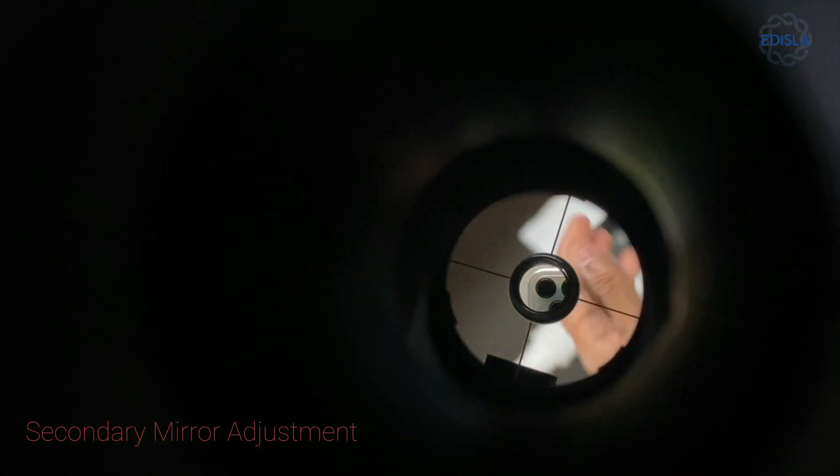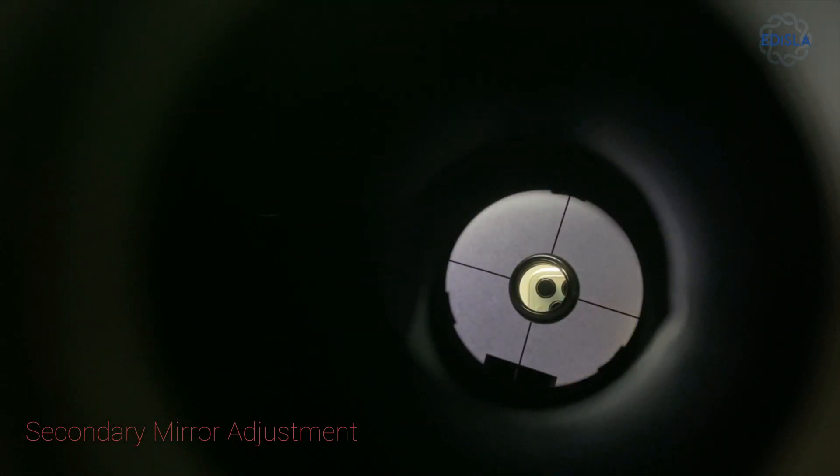Next, check the setup against a white sheet in the background. Your telescope should now be properly collimated.